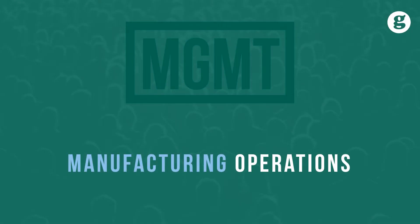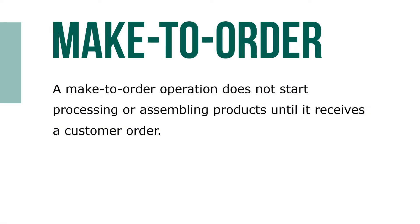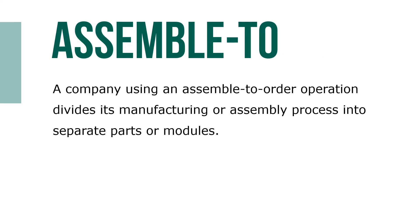Let's take a look at manufacturing operations. Manufacturing operations can be classified according to the amount of processing or assembly that occurs after a customer order is received. The highest degree of processing occurs in make-to-order operations. A make-to-order operation does not start processing or assembling products until it receives a customer order.